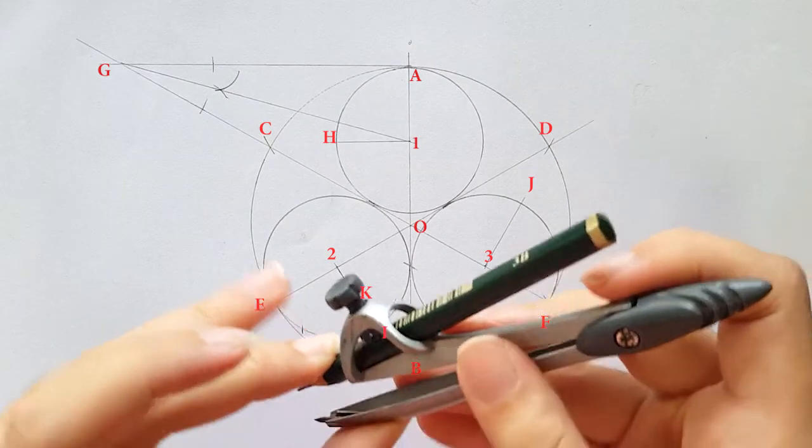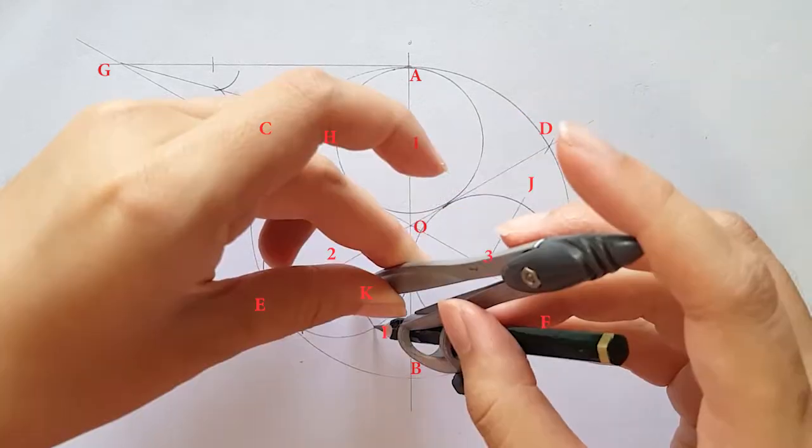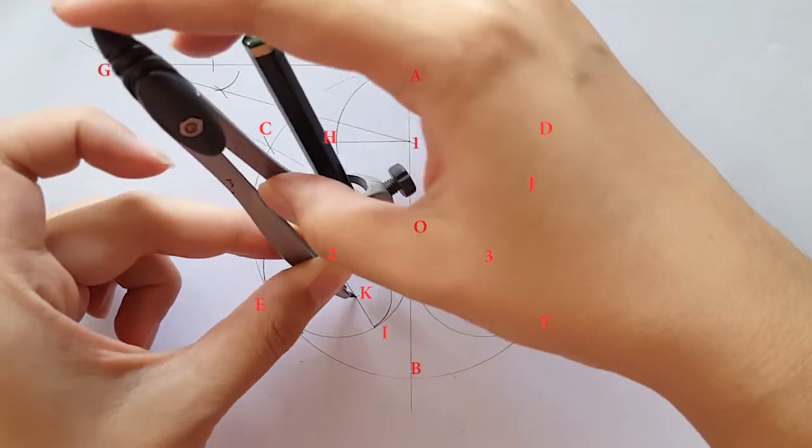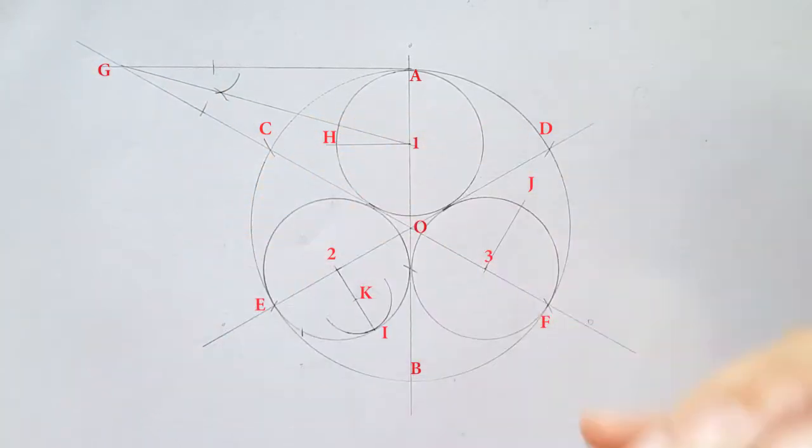Place your compass on point K to draw a half circle.